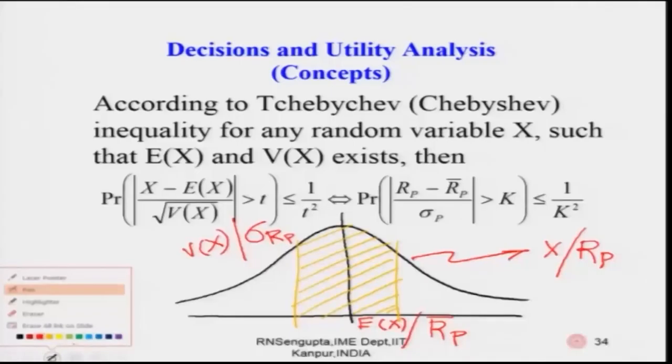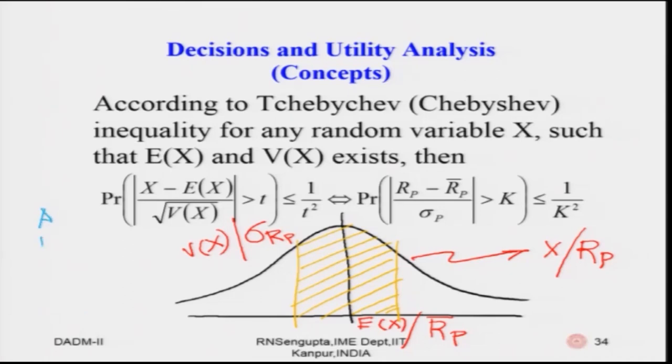If you have 2 or 3 different types of distributions that are not normal — with different mean values and variances for decisions A, B, C — when you apply Chebyshev's inequality you will have some value of k, and the bound 1/k² gives you the bound such that you can rank the decisions based on the safety first principle.